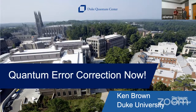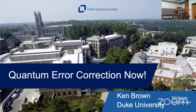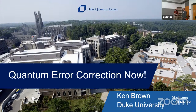I've known Ken for many years — he's a fellow ion trapper. He started his career as a theoretical chemist in Brigit Whaley's group at Berkeley, graduating in 2003. Along the way he intersected with David Bacon, David DiVincenzo, Daniel Lidar, and others who pulled him into the quantum information theory context. He's continued making contributions in both chemistry and quantum information throughout his career.